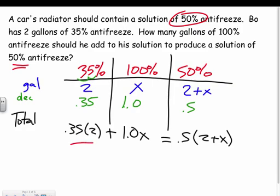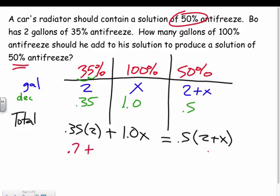The equation is: the 35% at 2 gallons plus the 100% we're adding equals the 50% mixture. That's 0.35(2) + x = 0.5(x + 2). Calculating: 0.35 times 2 = 0.7. Distributing the right side: 0.5(2) = 1 and 0.5x. So we have 0.7 + x = 1 + 0.5x.